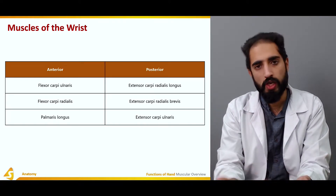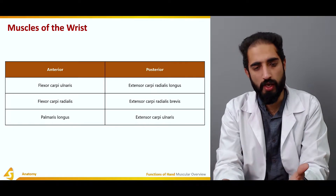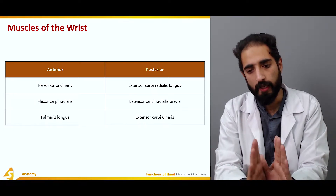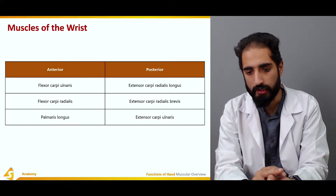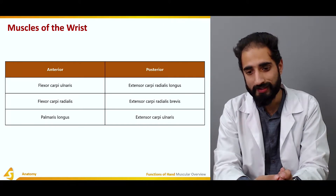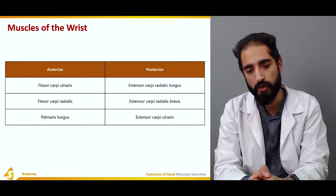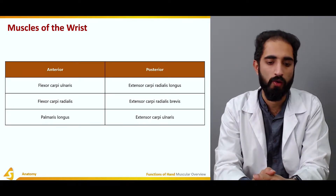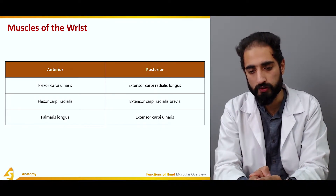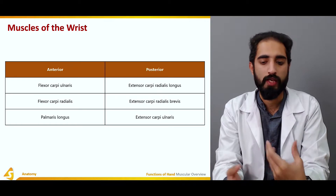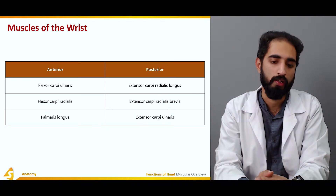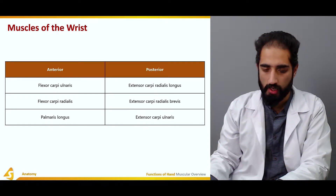In the anterior aspect, the flexors include flexor carpi ulnaris, flexor carpi radialis, and palmaris longus. In the posterior aspect, we have three muscles, but two are radialis muscles: extensor carpi radialis longus and extensor carpi radialis brevis — unlike the anterior aspect which had only one flexor carpi radialis. We also have extensor carpi ulnaris in the posterior aspect, corresponding to the flexor carpi ulnaris on the anterior side.